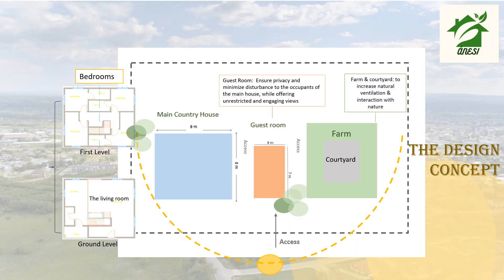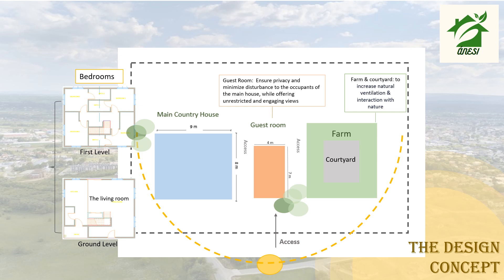I created a logo for my country house in Corfu. The logo has the name Annecy, which means comfort in Greek, making it the perfect place for relaxation. The Annecy house consists of a main building, guest room, and small farm with proper access from all directions. The guest room ensures privacy while offering unrestricted views, and the farm and courtyard increase natural ventilation and interaction with nature.